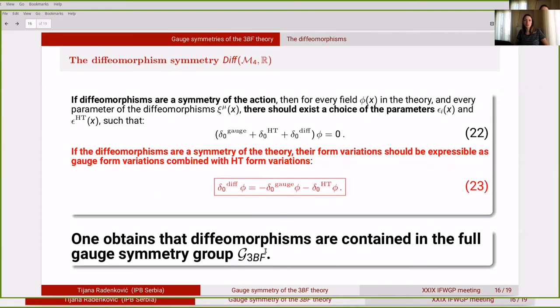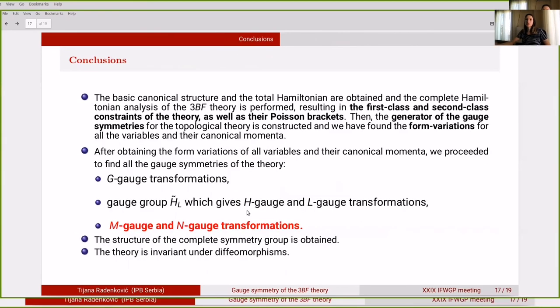Let us now just briefly mention the diffeomorphism symmetry. We know if the diffeomorphisms are a symmetry of the action, then for every field in the theory and every parameter of the diffeomorphisms, there should exist a choice of the gauge parameters and Noether parameters so that equation 22 holds. We have found the diffeomorphism form variation. What does this mean? That means that the diffeomorphisms are contained in the full gauge symmetry group J3BF.